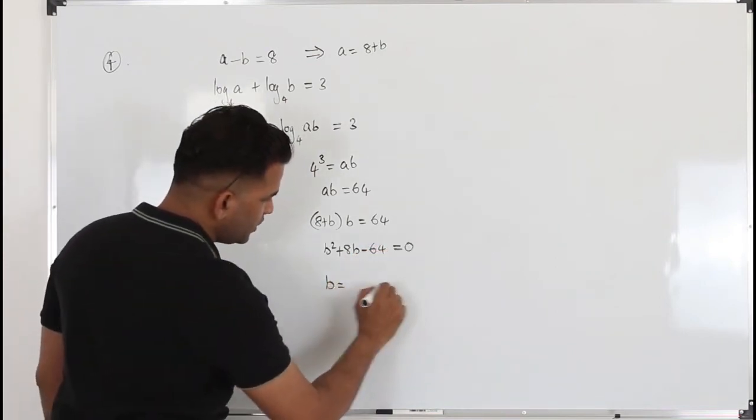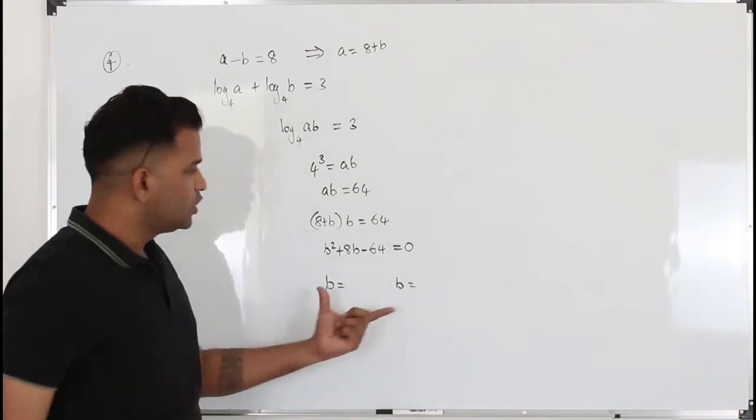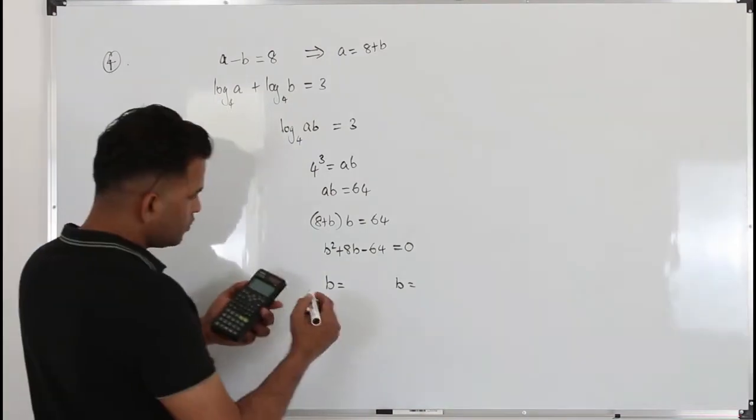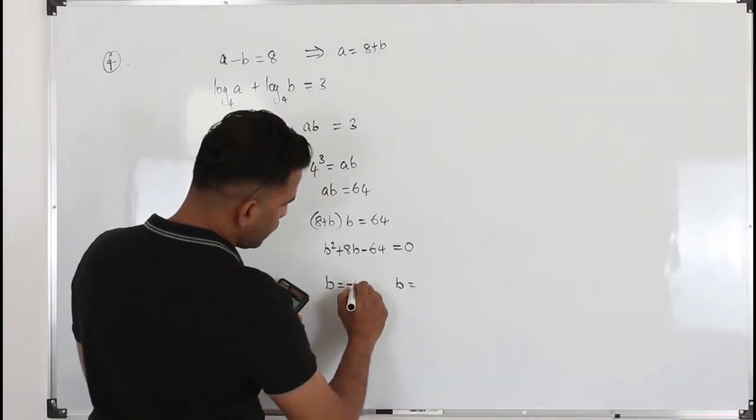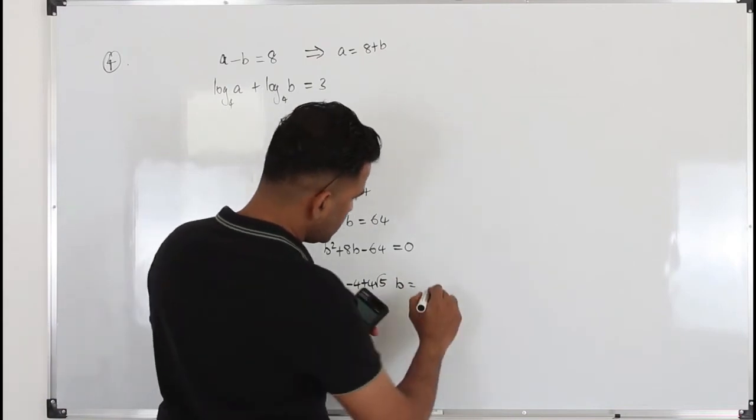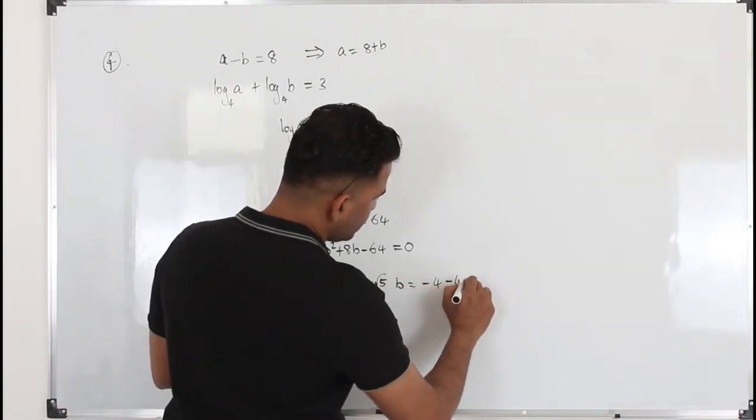Solve for b. Once you got two b values, plug in the values here and find the corresponding a values. So b values are negative 4 plus 4 root 5, and negative 4 minus 4 root 5.